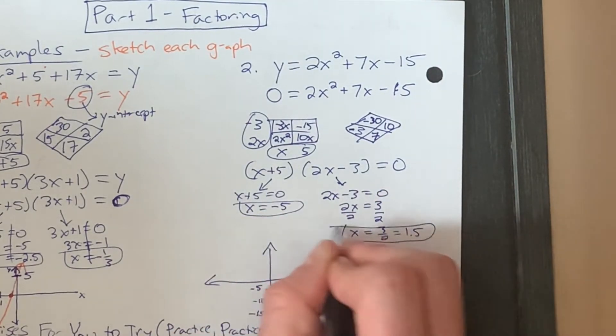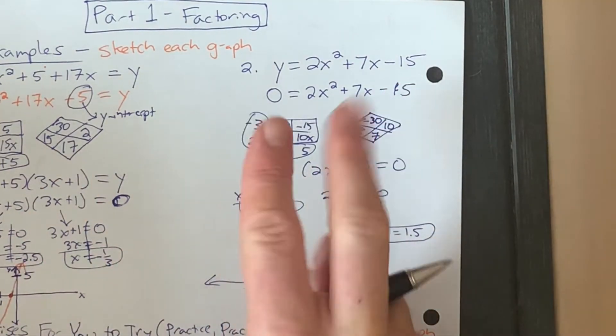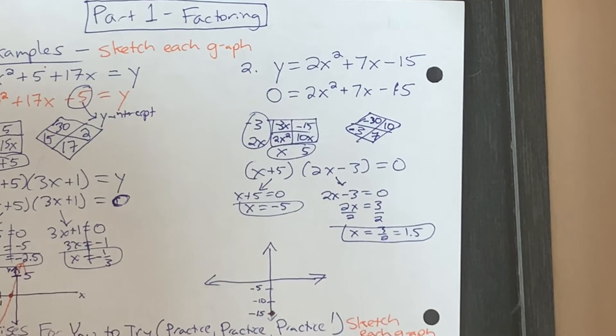So we have here our two x-intercepts. We have a y-intercept. That's enough to get a graph, because we have two key features, x-intercepts, y-intercepts, enough to sketch out the graph.